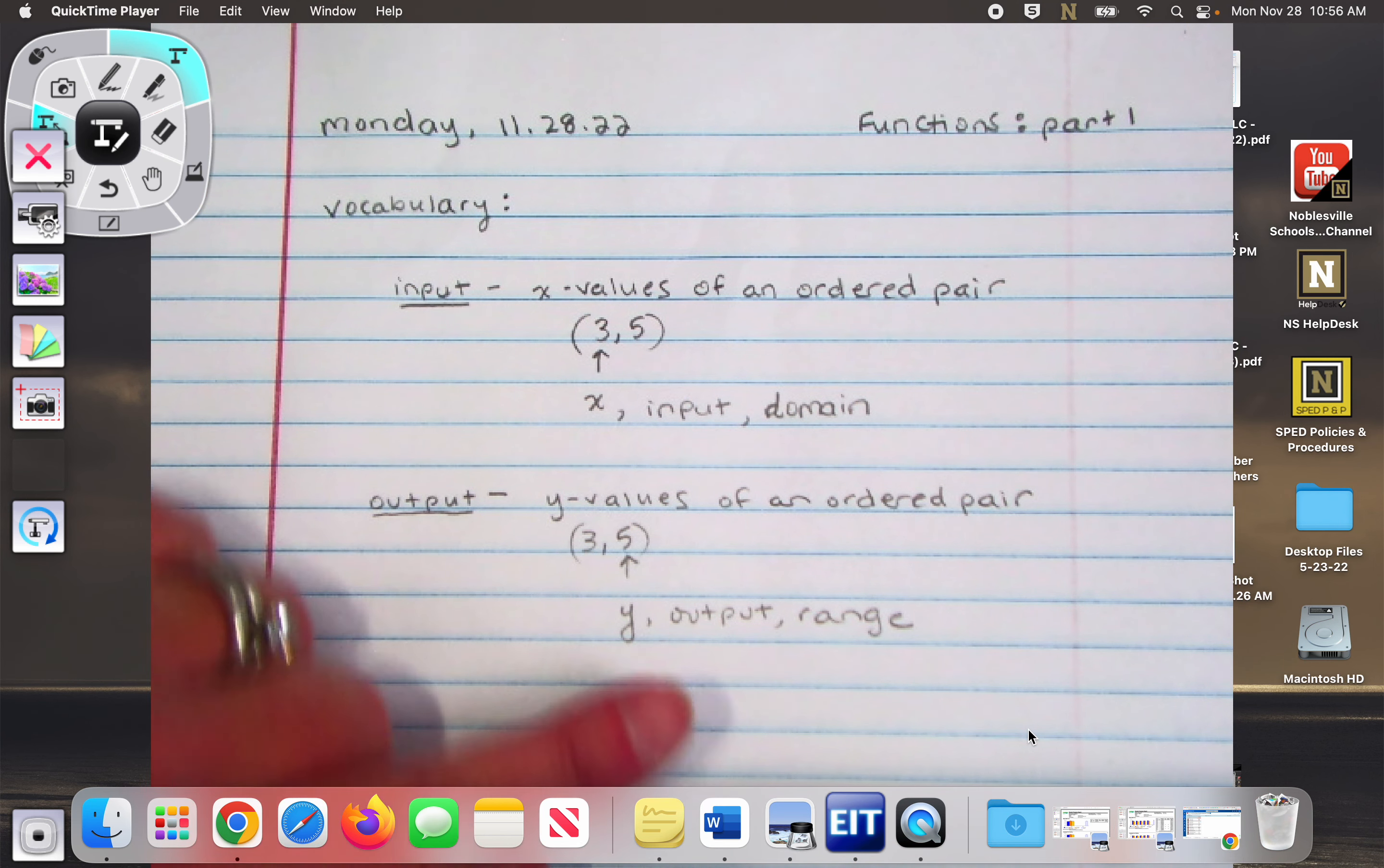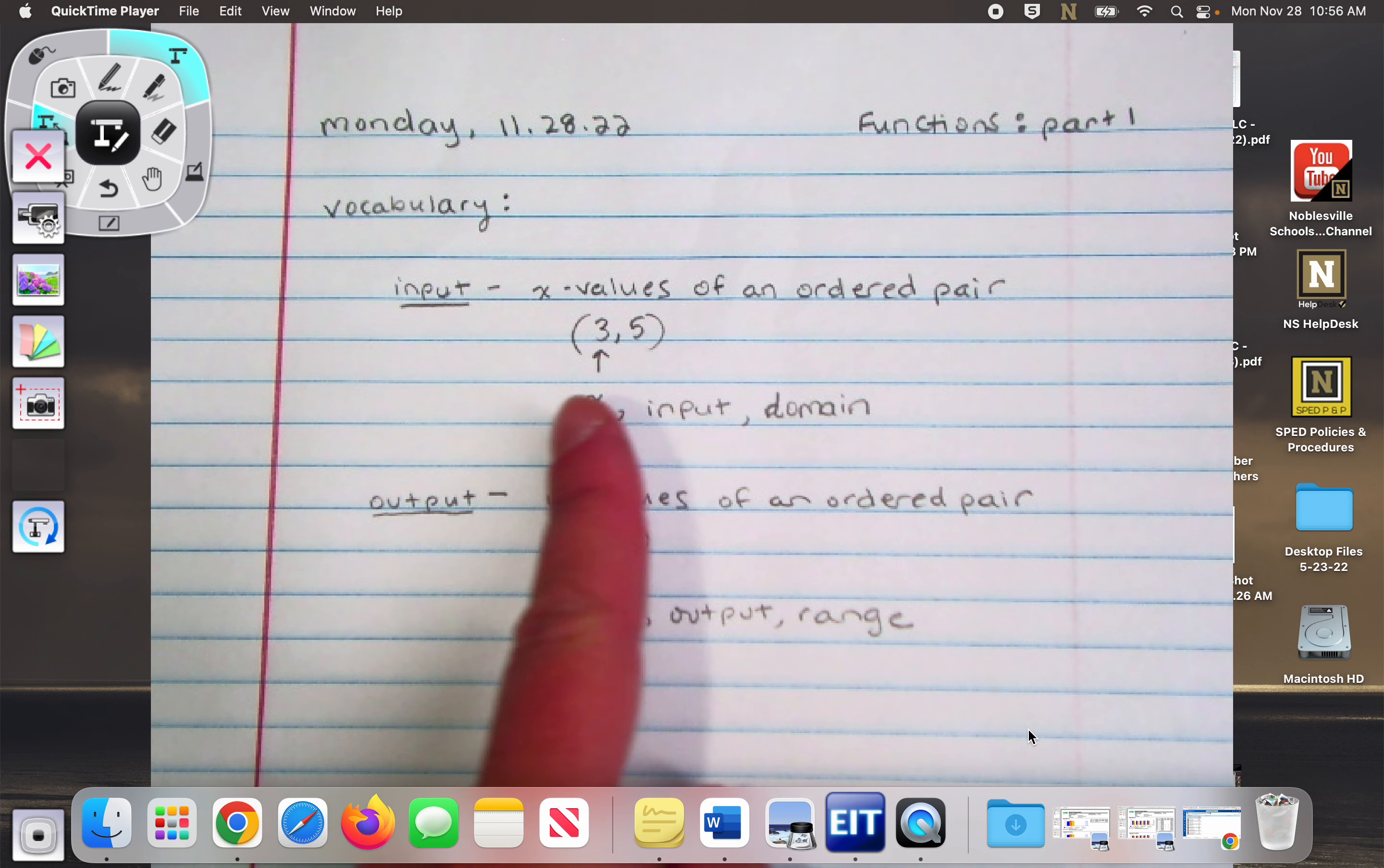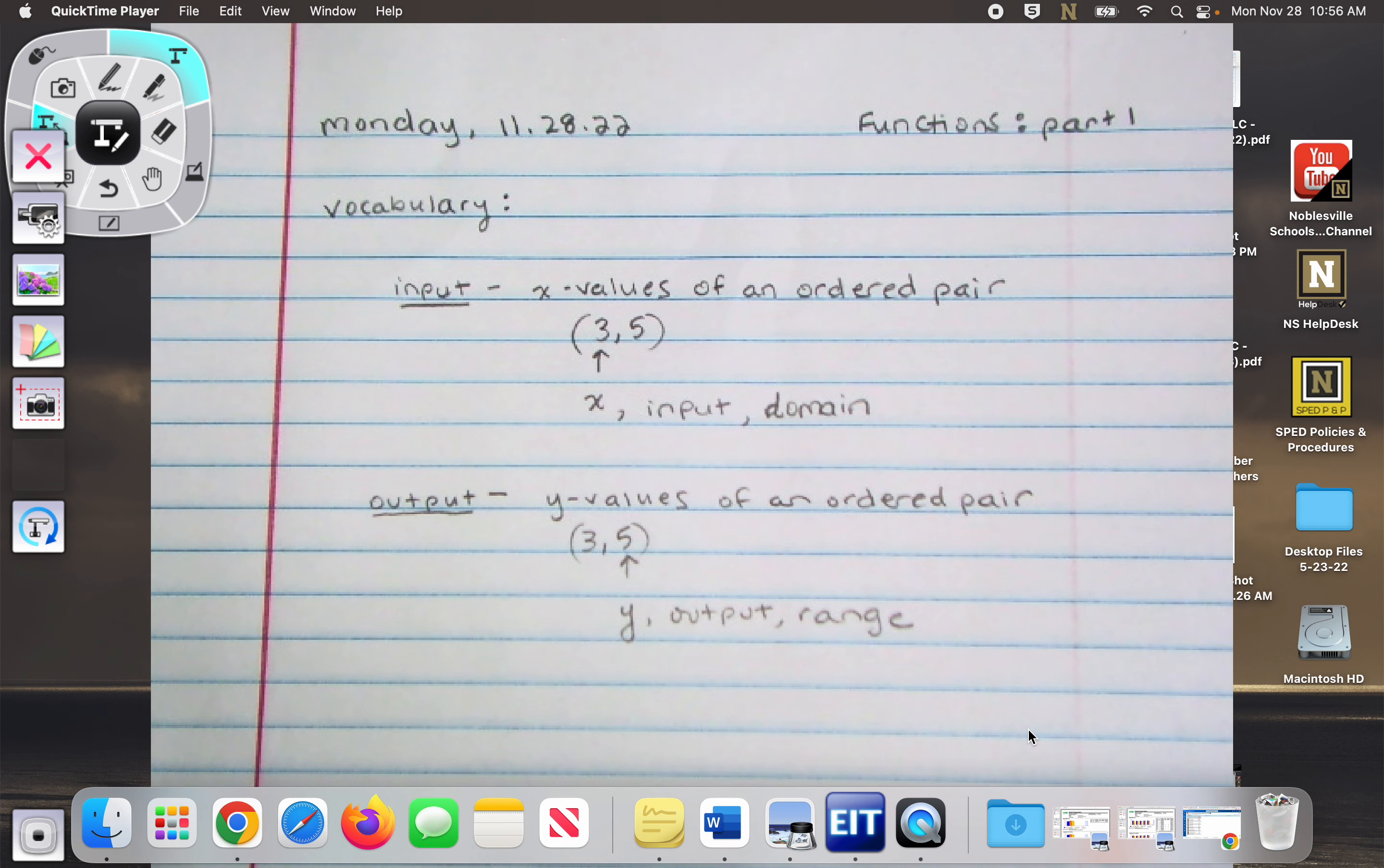So we have the y value, which is also known as the output, which is also known as the range. Okay, so we have inputs and we have outputs. Input is always talking about the x. Output is always talking about the y.